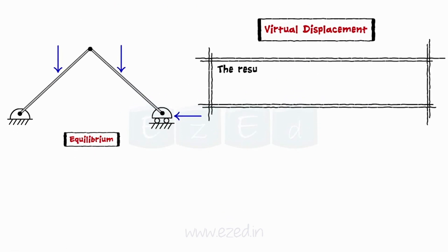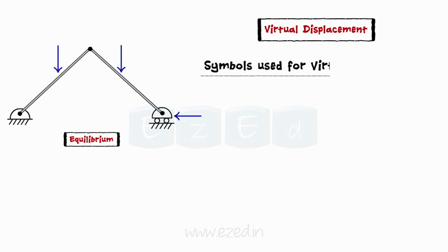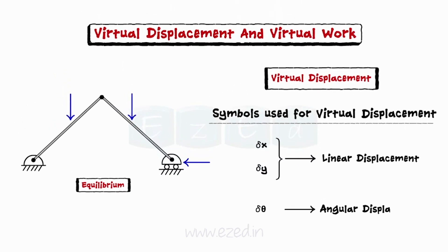The resulting work done by the forces on the body during the virtual displacement is called virtual work. The symbols generally used for virtual displacement are delta x or delta y for the linear displacement along x-axis and y-axis respectively, and delta theta for an angular displacement.